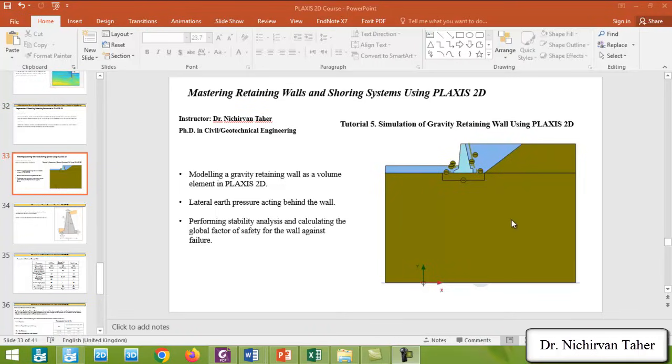As you can see in this figure, we will have a gravity retaining wall like this one shown here. The purpose of this tutorial is to model a gravity retaining wall as a volume element in PLAXIS 2D. Also, the second point: we will estimate the lateral earth pressure behind the gravity wall, and we will perform a stability analysis to calculate the overall stability factor for this example.